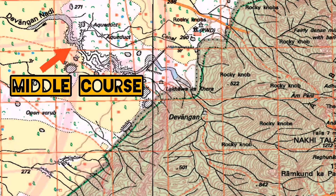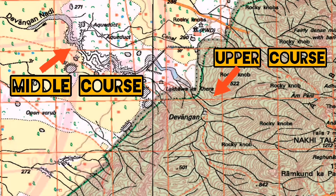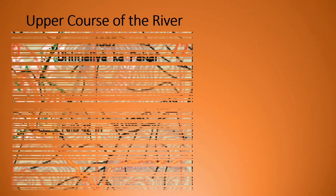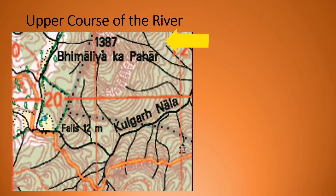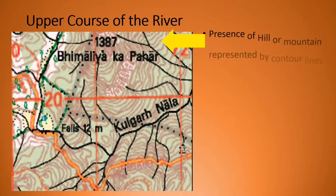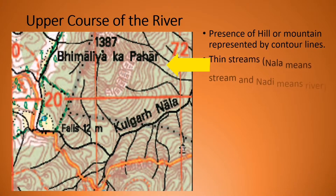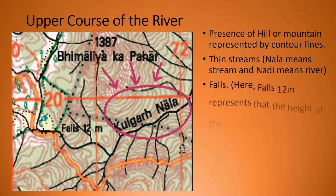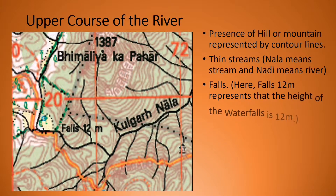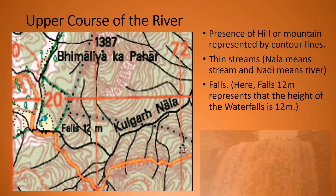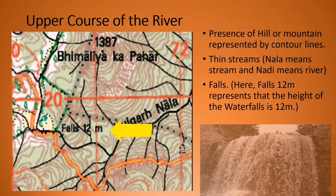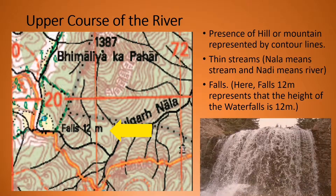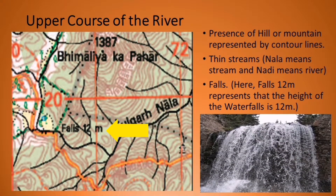Now let's learn all the three stages of the river one by one in detail. First, upper course of the river. Look at this map — here you can see a lot of contour lines, so definitely there will be presence of a hill or mountain. The streams are very very thin here in the upper course. You see the word Nala here — Kulgarth Nala — Nala means stream. So usually in the upper course we have streams, whereas in the middle course you will see it as a Nadi, which means river. And in some cases you can also see the word 'falls' — for example, falls 12 meter — which represents the height of the waterfall is 12 meters.